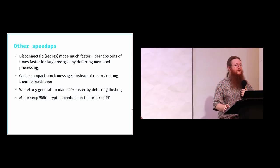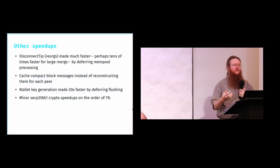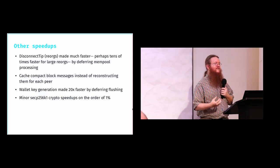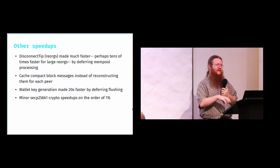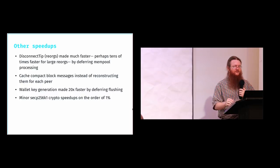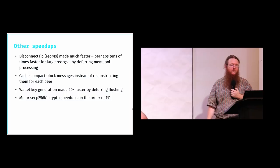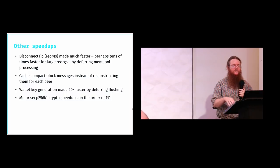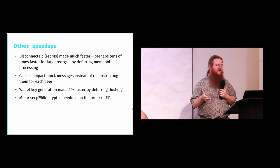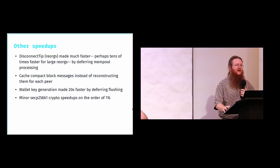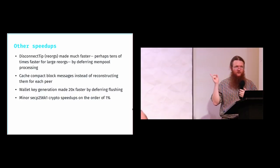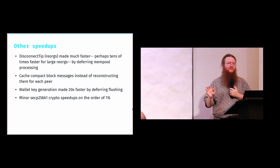There are many other speedups in 0.15. Disconnect-tip — the operation central to blockchain reorganization, unplugging a block and undoing it — was made perhaps tens of times faster for large reorgs by deferring mempool processing: instead of putting each block's transactions into the mempool one block at a time, it now does all of this in a batch. Caching was added for compact block messages so the constructed message is cached rather than rebuilt for each peer. Key generation in the wallet was made about 20 times faster by not flushing the database between every inserted key. There were also minor crypto speedups on the order of 1% — hard-won since improvements to underlying crypto are very difficult to achieve.